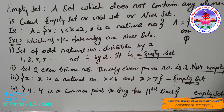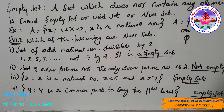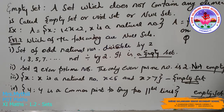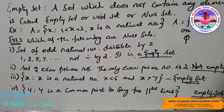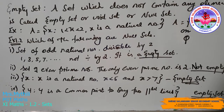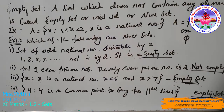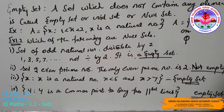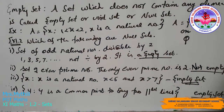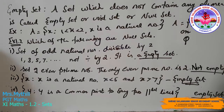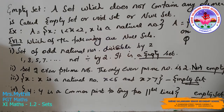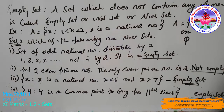Let's see Exercise 1.2: which of the following are null sets? First question: the set of all natural numbers divisible by two. The odd natural numbers are 1, 3, 5, 7, which are not divisible by two, so it is an empty set. Second: the set of even prime numbers. The only prime number is 2, so it is not an empty set because one element, 2, is present.